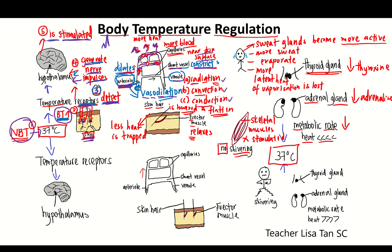Next, sweat glands become more active when you are hot, when you do vigorous exercise. So sweat glands become more active, more sweat will be produced, and more sweat evaporates. When more sweat evaporates, more latent heat of vaporization is lost.